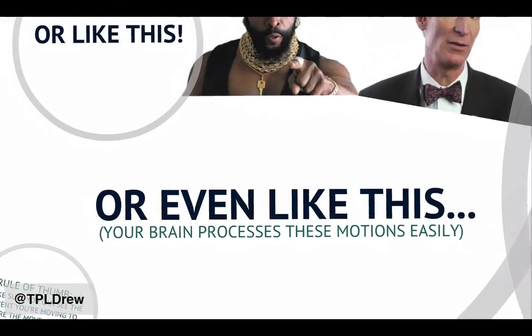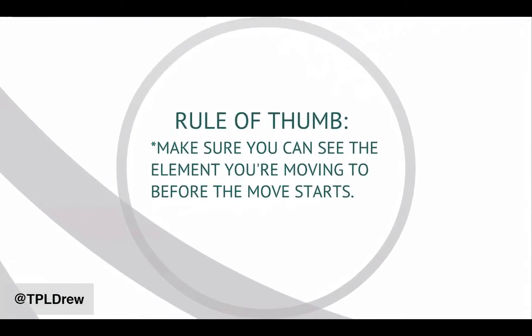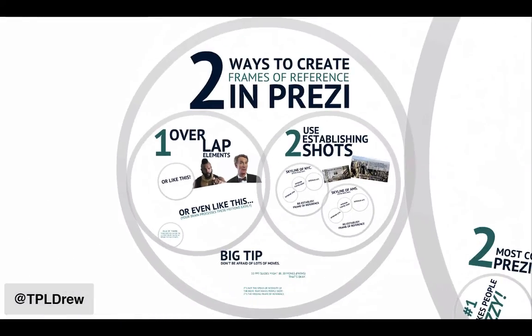And that's the key to actually creating a great Prezi. So the rule of thumb for overlapping elements is just thinking about this: make sure you can actually see the element you're moving to before the move starts. Now, this is a rule of thumb — something that's supposed to help you with this. So when you're creating your Prezi presentations, think about little overlaps. It can be a slight rotation overlap, it can be a zoom overlap, but overlap the elements in a way that helps you actually see those moves happen.